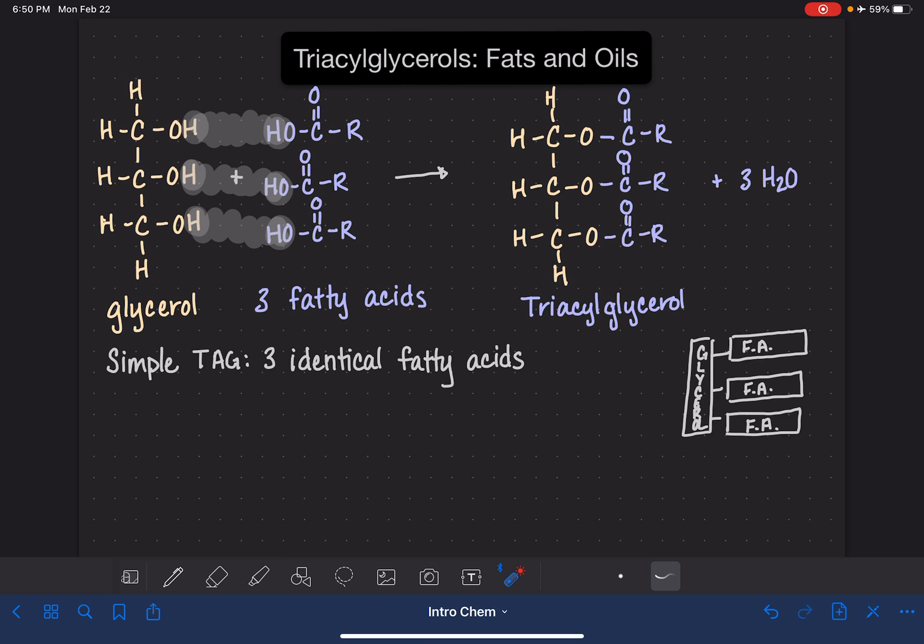But not all triacylglycerols are going to have identical fatty acids. In fact, most of them do not have the same fatty acid. If I just change this by saying, let's make that R prime, so now we know that it's different from regular R. Let's make this one double prime, so it's different from the others. This type of triacylglycerol we would call mixed. A mixed triacylglycerol is one that comes from two or more types of fatty acids. Could be two, could be three.